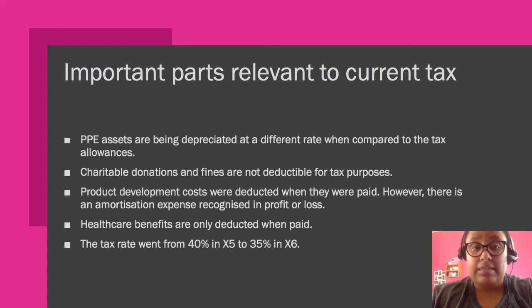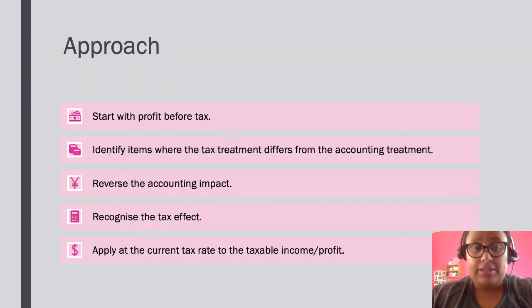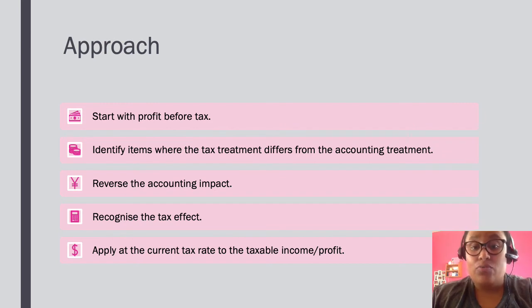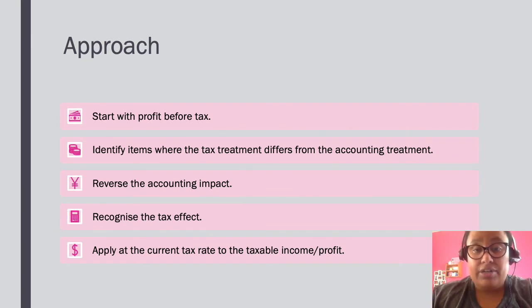We need to make sure that when calculating current tax for X5 we use 40% and for X6 we use 35%. In terms of how you approach your current tax calculations, the standard approach is: first, start with your profit before tax — that is always the starting point. Then identify items where the tax treatment differs from the accounting treatment. In your reading time you would have highlighted these items so they stand out when you do the calculation.